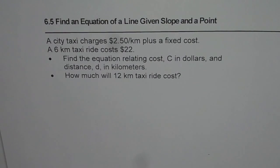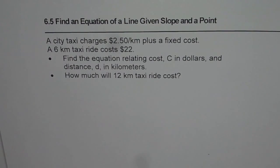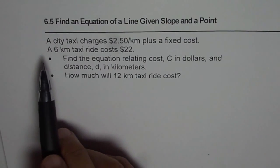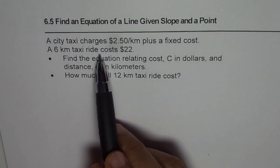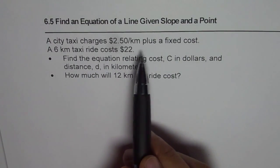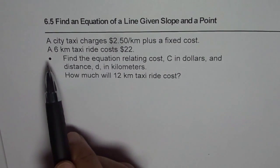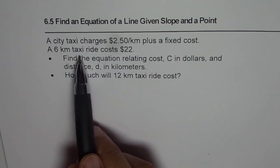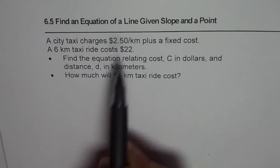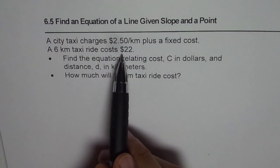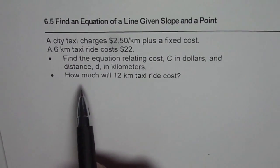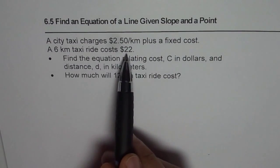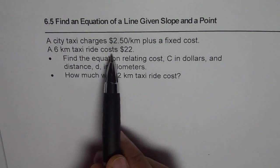I am Anil Kumar and now we are going to take a few real life situations where we need to find the equation of a line given slope and a point. The question is: a city taxi charges $2.50 per kilometer plus a fixed cost. A 6 kilometer taxi ride costs $22. In this question, we are given the rate which is the slope, and we are given a point — that is, a 6 kilometer taxi ride costs $22.